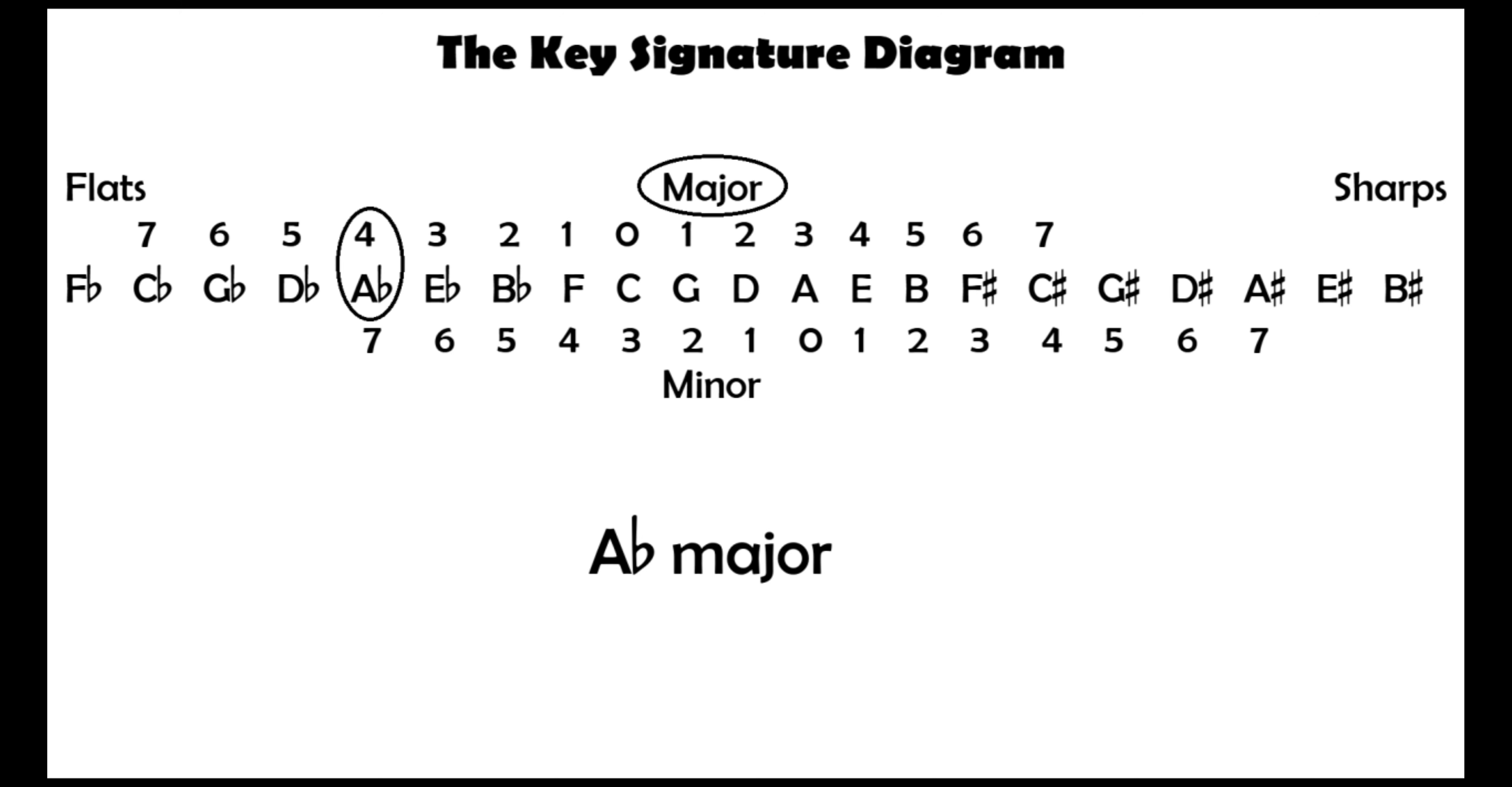So A flat major has 4 flats. The order of the flats tells us that these 4 flats are B, E, A and D.